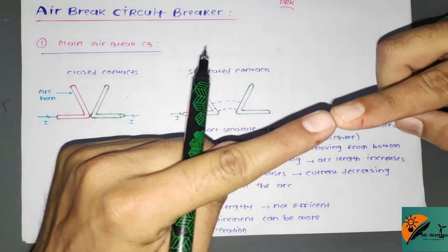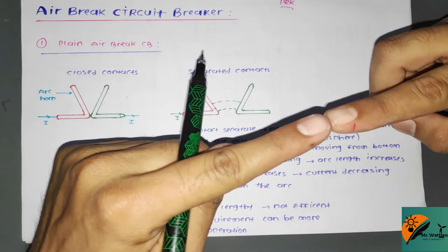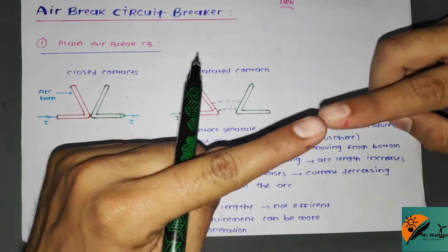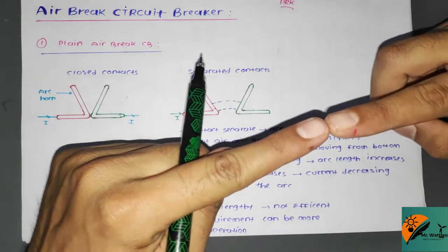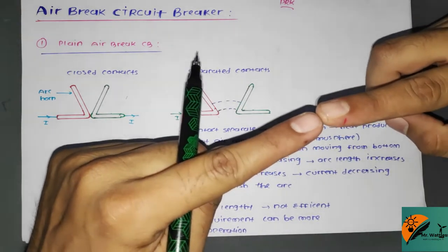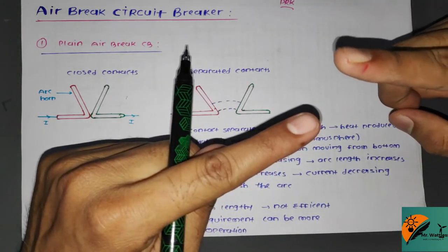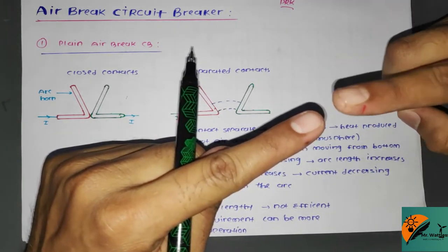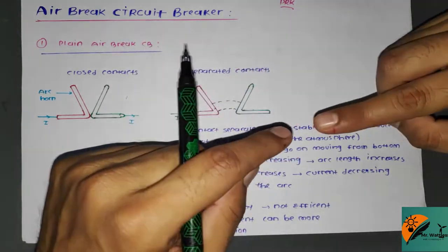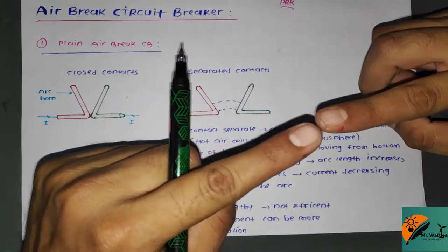We know that when the circuit breaker opens, there are two contacts: a moving contact and a fixed contact. The moving contact moves away under faulty conditions. In the air brake circuit breaker, when connected, the arc is produced by the high magnitude of current, and the arc does not extinguish or vanish on its own.